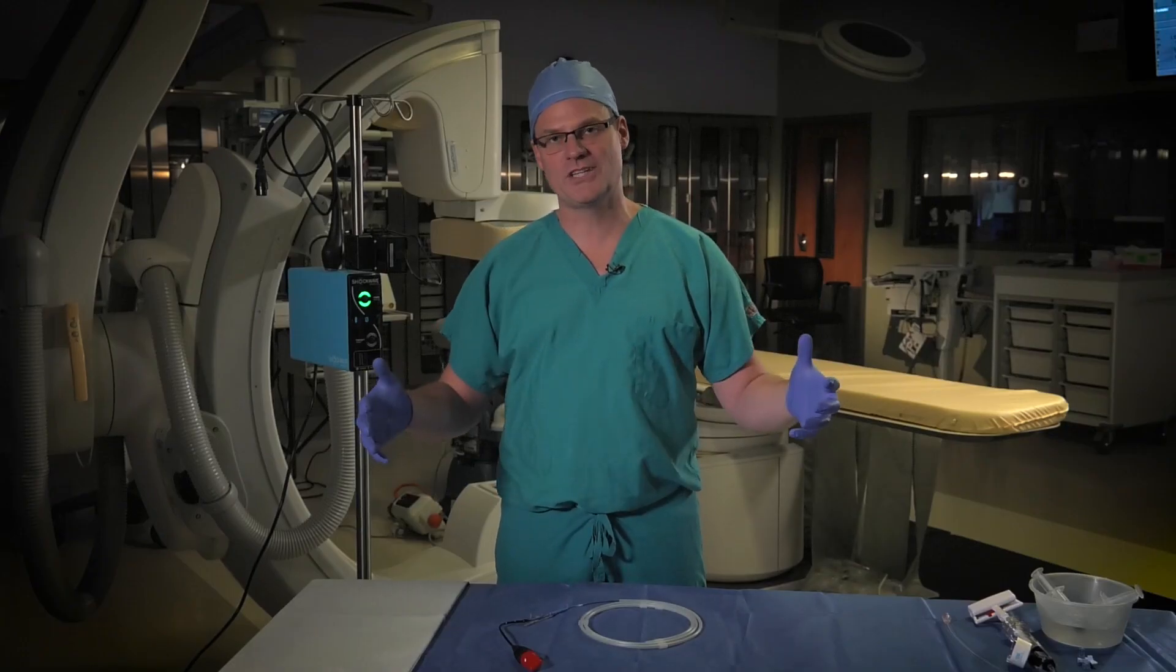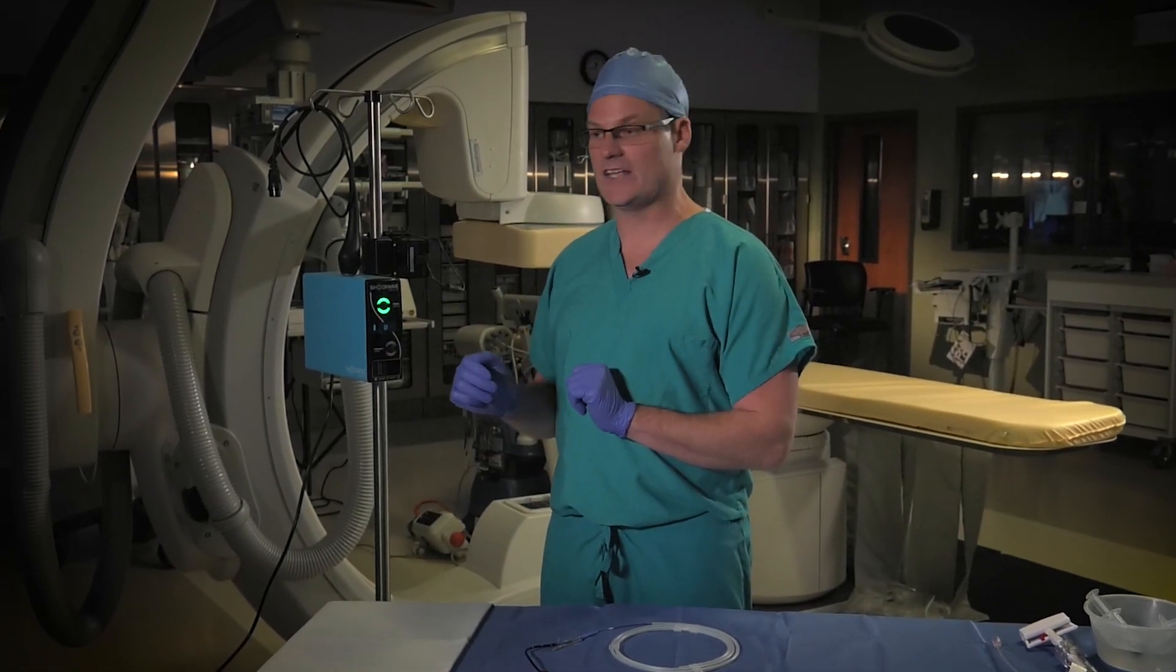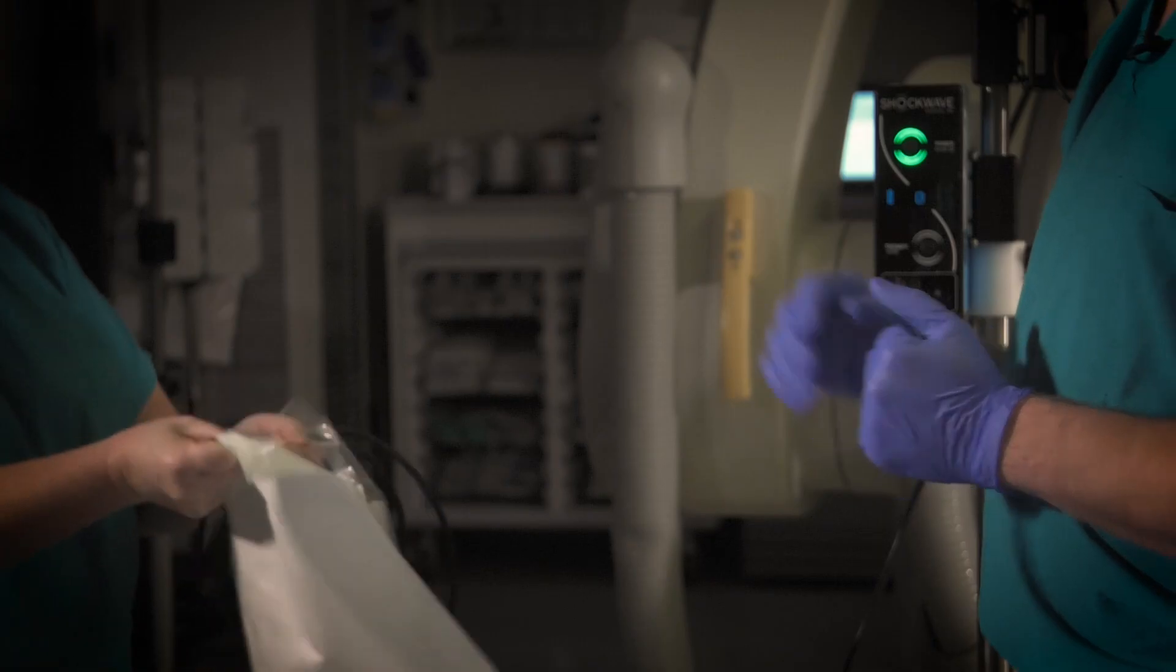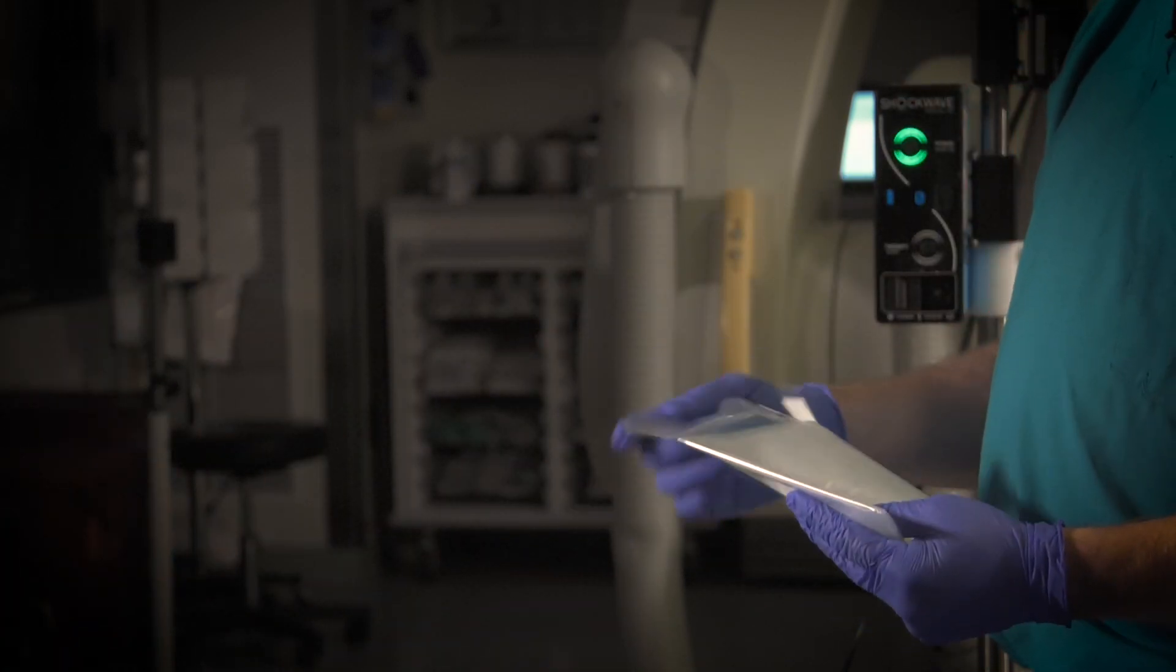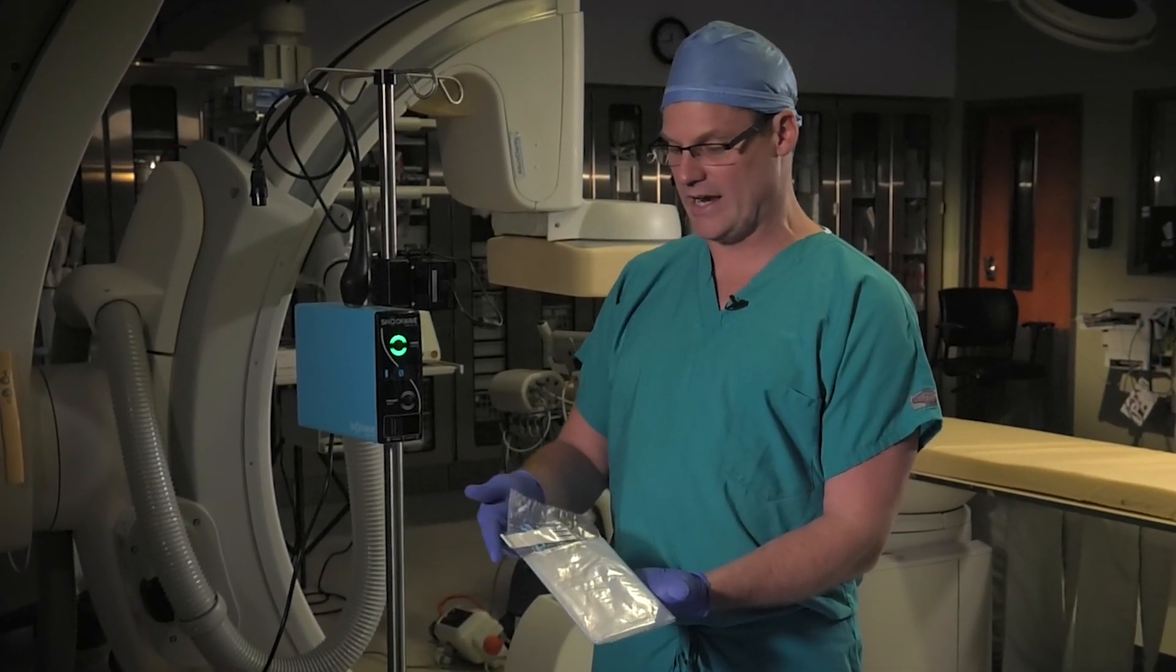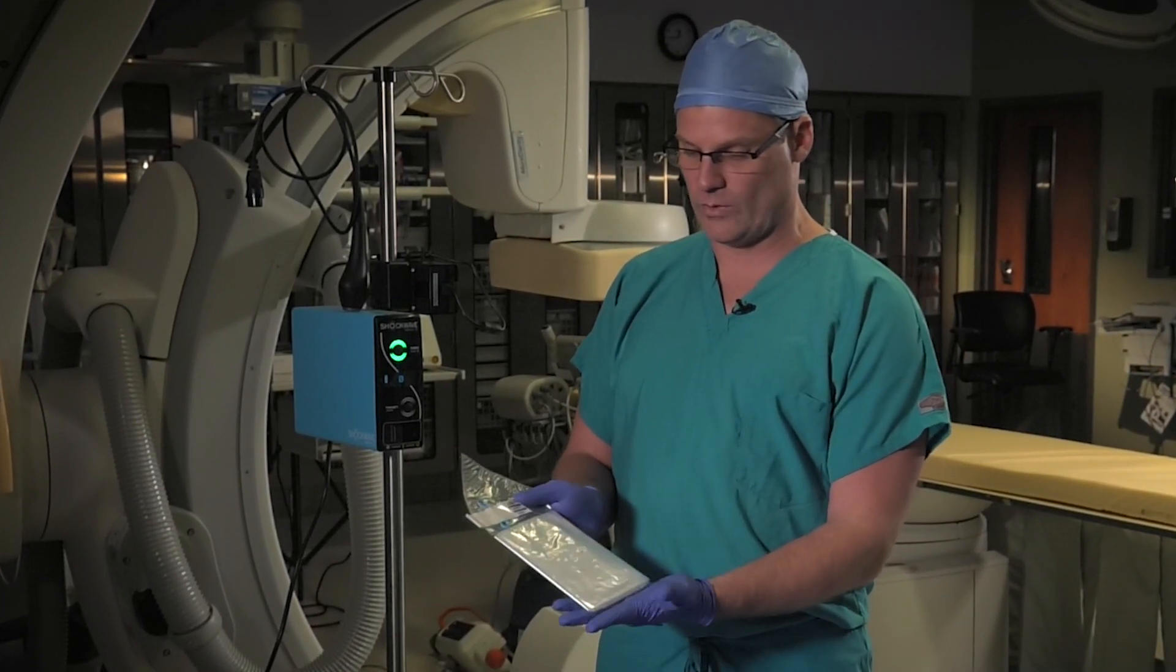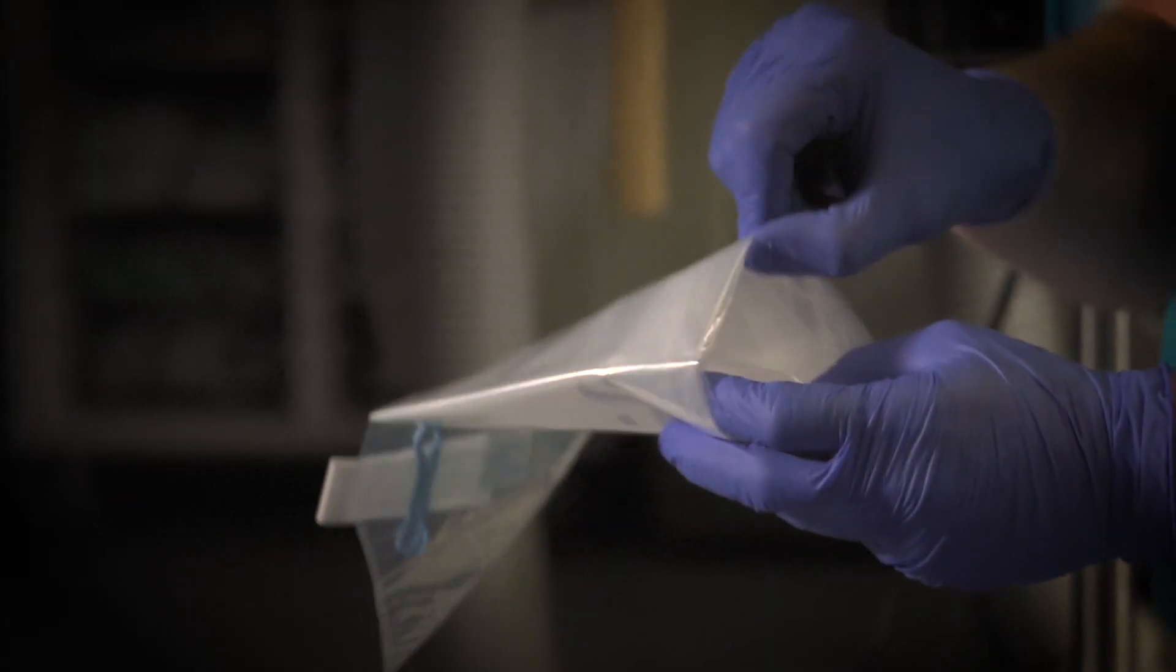My technician, who is non-sterile, is going to hand it off to me, so I grab the sterile sleeve. As you can see, the sterile sleeve has two ends: one end is triangular and the other end is square. What we're going to do first is reach in the square portion of the sleeve.